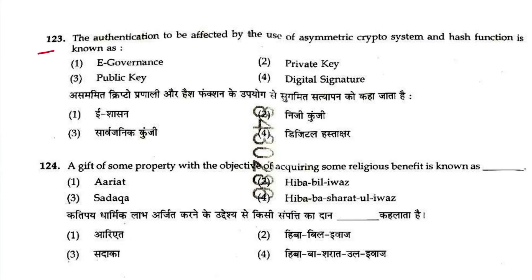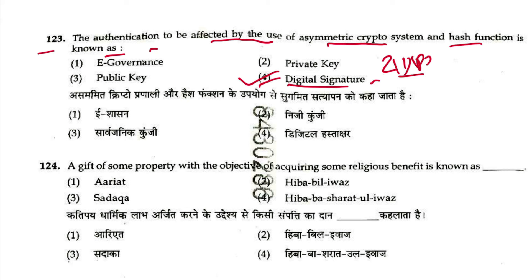Question 123: Authentication effected by use of asymmetric crypto system and hash function is known as a digital signature. Answer is 4. This is explained in Section 2(1)(p) — see the explanation mentioned there.